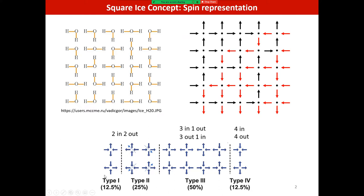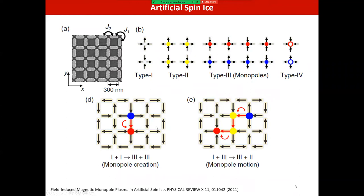Two of these six configurations are unpolarized — summing all spins gives zero magnetization. However, in the other four configurations there is a net polarization, giving a total magnetization. These polarized states are more energetic compared to the unpolarized ones; we can call the unpolarized the ground state and the others excited states.